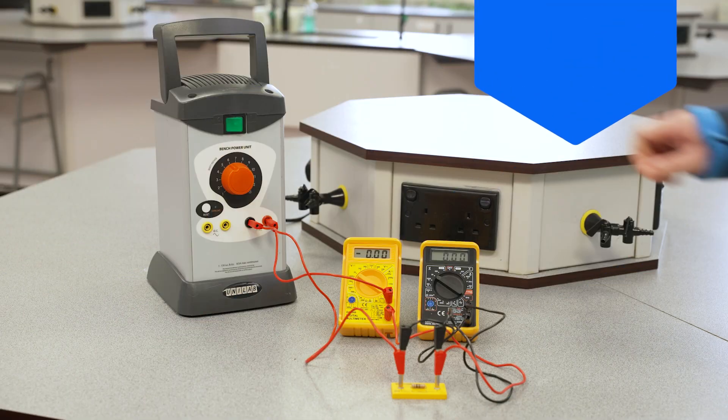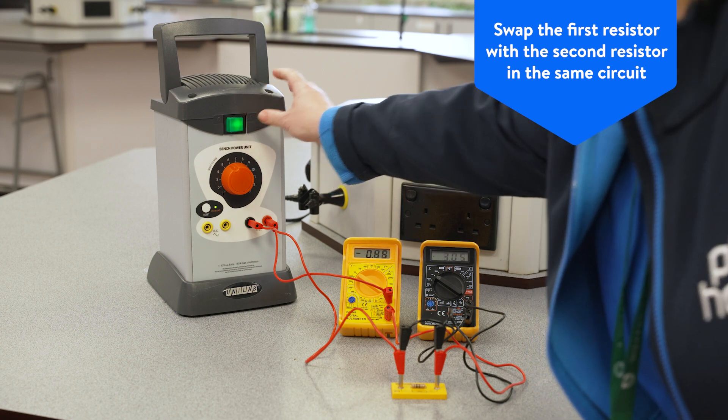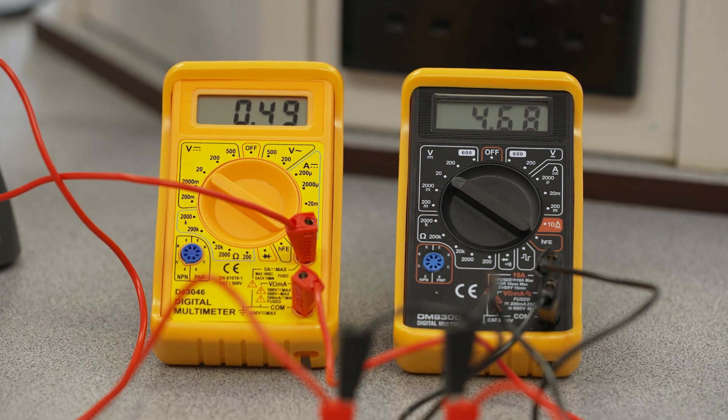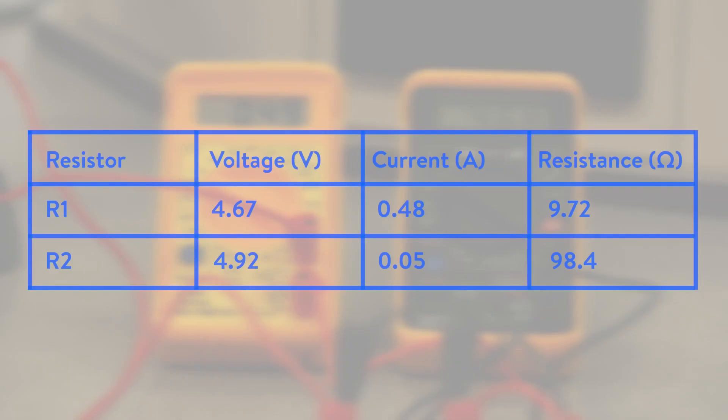Connect the second resistor in a simple circuit and turn the power supply on. Take the readings from the ammeter and the voltmeter and again record your results. You could use a table like this to record your results.